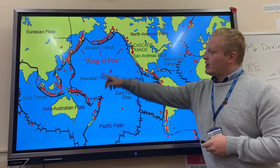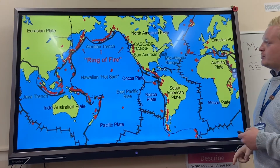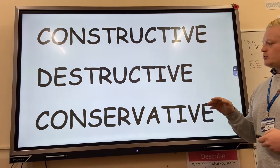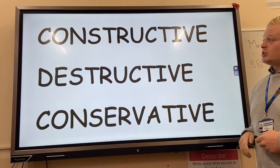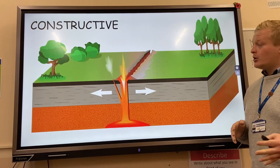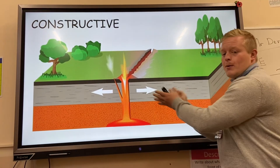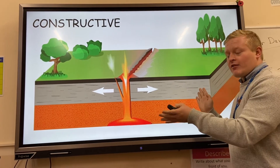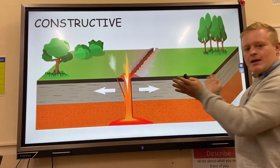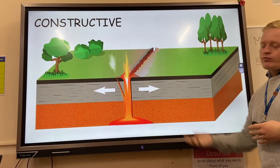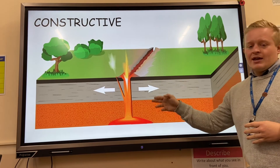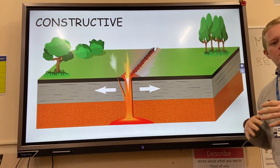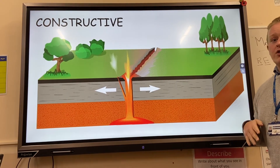Especially around the ring of the Pacific Ocean. We've got three different types of plate margins: constructive, destructive, and conservative. In a constructive plate margin, two pieces of crust move apart from each other — normally oceanic crust. They move apart, what rises from underneath is magma, heated up. That rises, it cools, it forms new land.